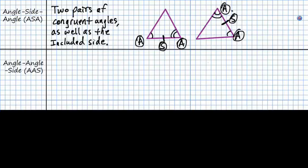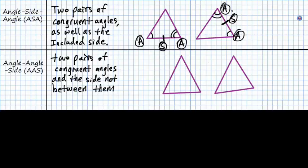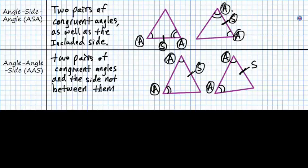And finally, we have angle-angle-side, or AAS. The angle-angle-side theorem is two pairs of congruent angles and the side not between them. So we would have congruent angles here, congruent angles here, and then include one of the sides that is not between the two angles — that qualifies for this theorem. So we have an angle, an angle, and a side: our AAS theorem.